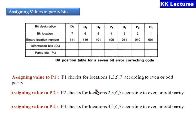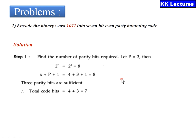To remember which positions each parity bit covers, we write the bit positions in binary. Positions 1, 3, 5, 7 all have a 1 in their LSB — so p1 covers positions whose LSB is 1. For p2, we check positions whose second bit is 1. For p4, we check positions whose third bit is 1 — that is, positions 4, 5, 6, and 7. This binary location method makes it easier to remember the groupings.